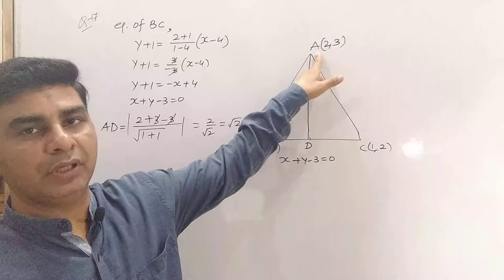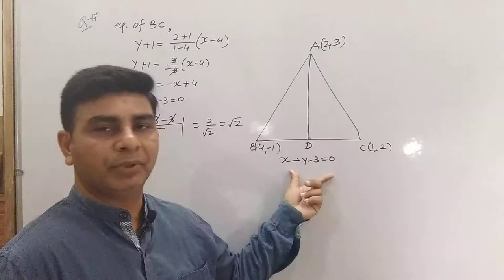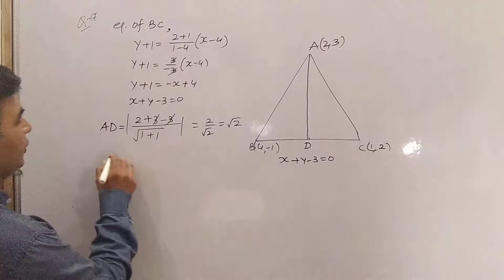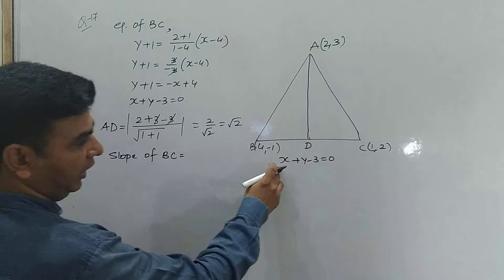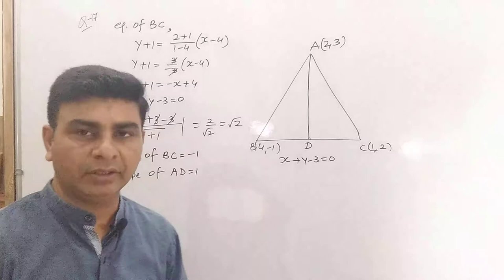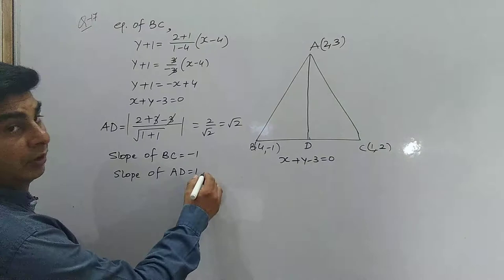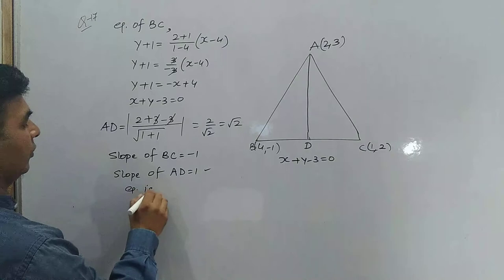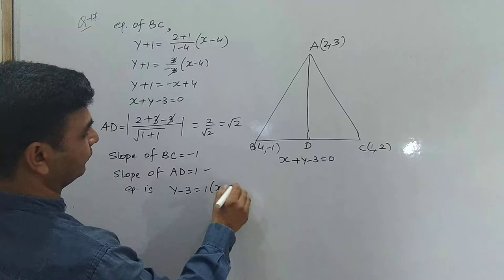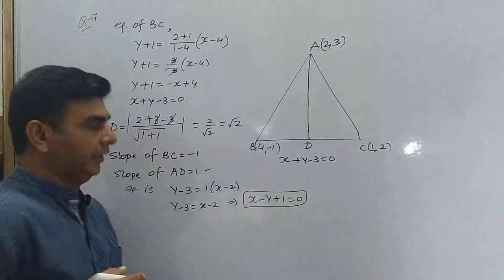Now we want to find the equation of line AD. Point A is already given. We need only the slope of AD. The slope of BC is given by -A/B = -1. The slope of AD will be +1, because whenever two lines are perpendicular, their slopes are negative reciprocals of each other. Using point-slope form: y - 3 = 1·(x - 2), which gives x - y + 1 = 0. This is the equation of line AD.